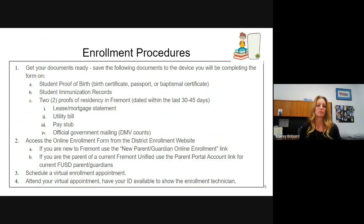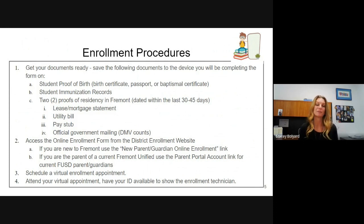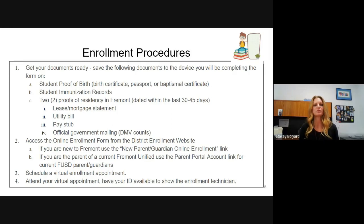Talking about the enrollment procedure: first, get your documents ready. The enrollment is done online, so these documents will need to be saved to the device you'll be completing the form on. We need proof of student birth — this could be a birth certificate, a passport, or a baptismal certificate. We also need the student's immunization record. And then we need two proofs of residency showing you live in Fremont, dated within the last 30 to 45 days.